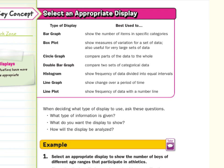So here are our key questions when deciding what type of display to use. First, what type of information is given? Second, what do you want the display to show? And third, how will the display be analyzed? Those are the three things we need to consider when selecting an appropriate display.